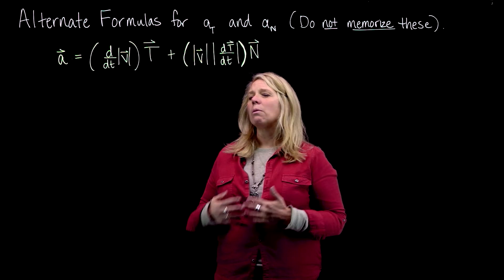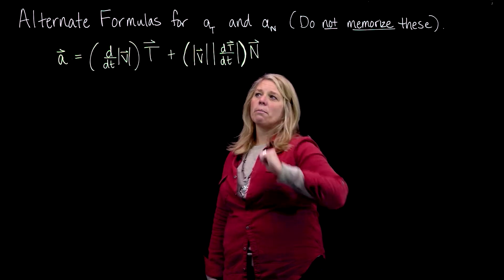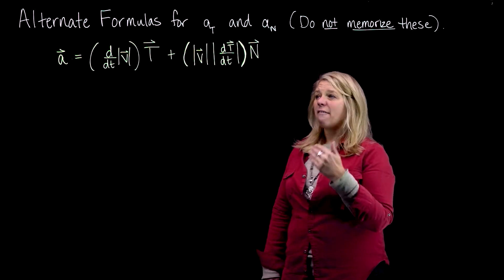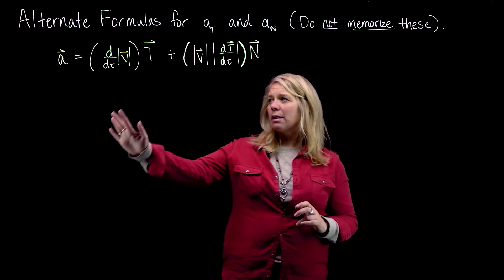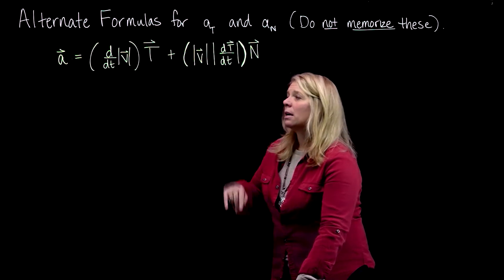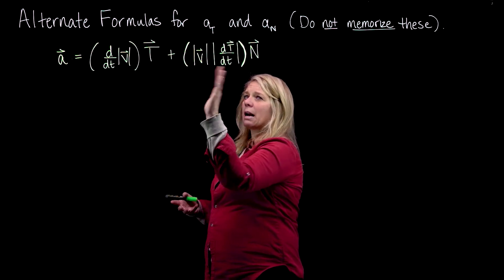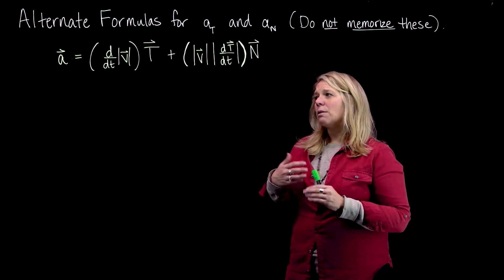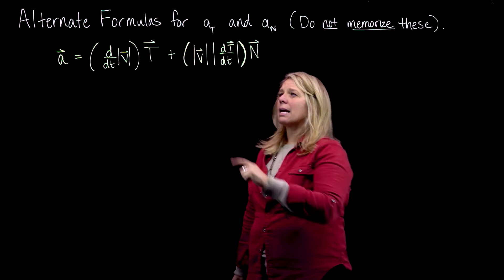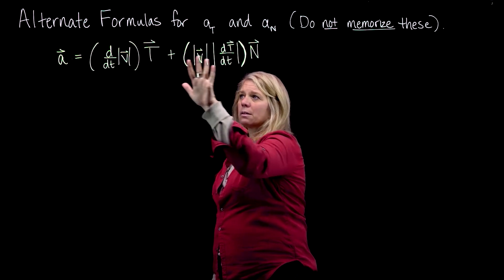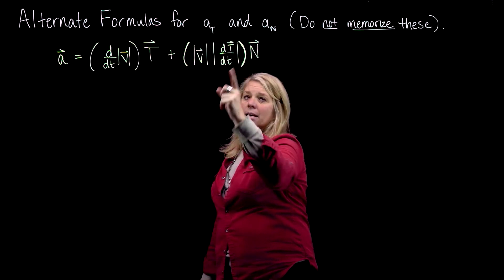In a previous video, when we were deriving what these two symbols mean — the tangential and normal components of acceleration — we started with the definition of the acceleration vector and did some derivatives and some substitutions. We came up with this expression here. The main idea was that we had taken the acceleration vector and rewritten it as a sum of scalar multiples. These two things in parentheses are scalars — a sum of scalar multiples of T and N.